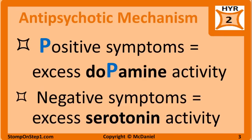We will start with a quick review of some material from my previous video on psychosis. Symptoms of schizophrenia can be broken down into two categories: positive and negative symptoms. Positive symptoms include behaviors or sensations that are not normally present. Examples include hallucinations, delusions, and catatonia. These symptoms are thought to be related to an excess of dopamine. I remember this by noting that dopamine has a P in it — P for positive and P for dopamine.